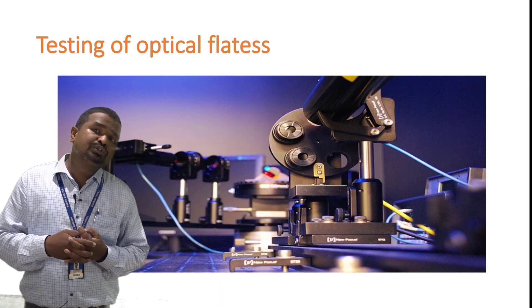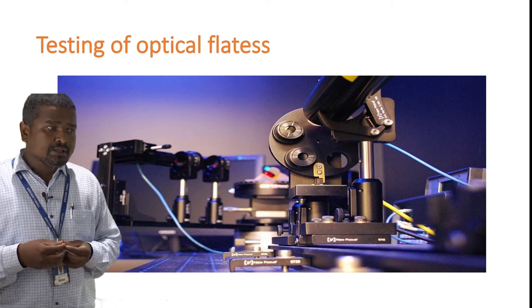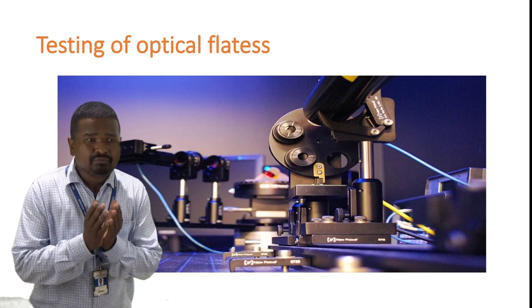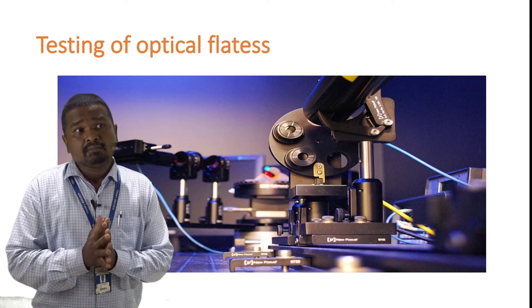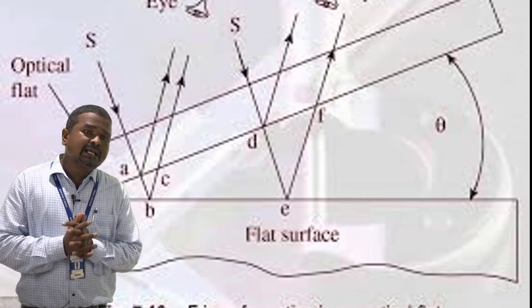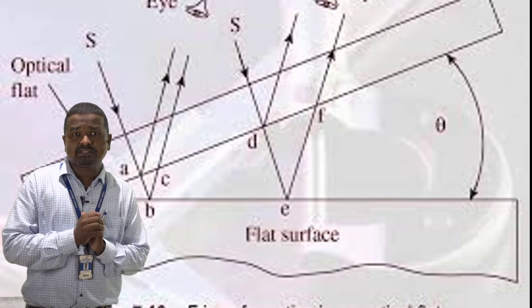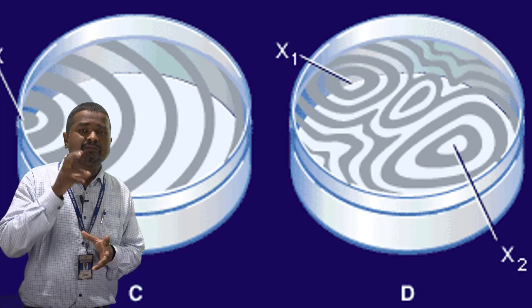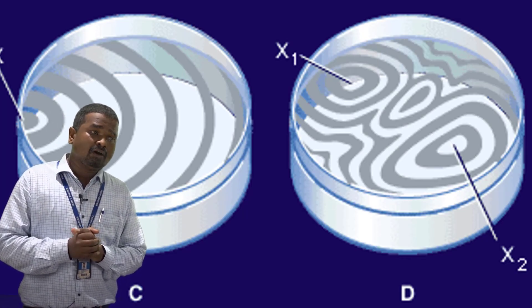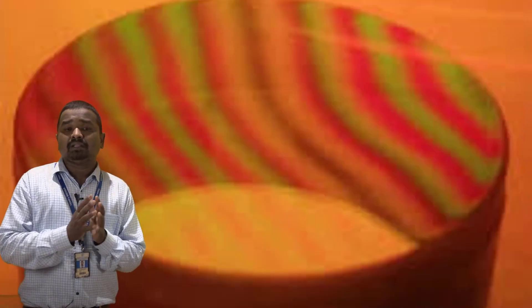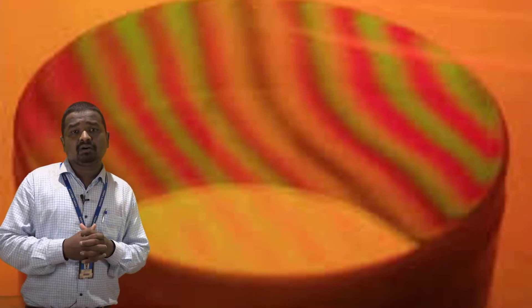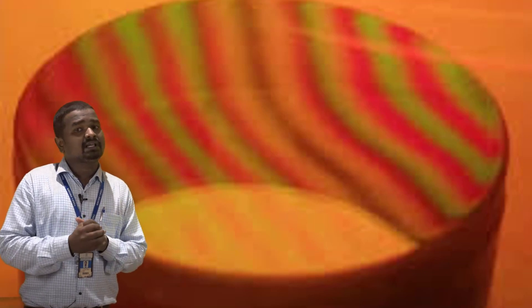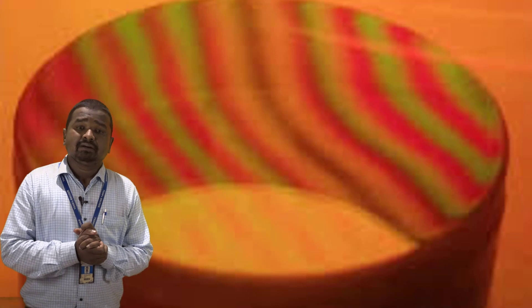The second application is testing the optical flatness of objects. In many situations, we want a completely optically flat surface. To check this, an optical flat surface is placed at a particular angle with the test piece, forming a wedge-shaped film, and fringes are observed. If the fringes are equidistant and parallel to each other, the test piece is optically flat. But if the fringes are disturbed, not straight, or curved, the test piece is not optically flat. These are some of the applications of interference. Thank you so much.